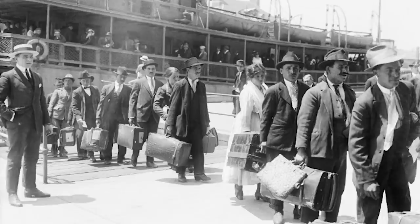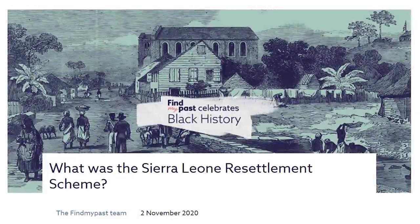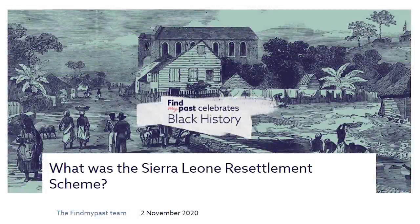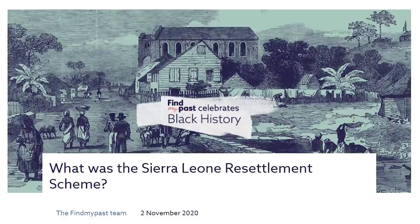Destinations have likewise not been random. Rather, particular destination points have tended to be linked to particular points of origin. Immigrants from particular towns in Lebanon often settled in clusters together in particular towns in Colombia. Among Lebanese immigrants to the West African nations of Sierra Leone and the Ivory Coast, there was likewise a concentration of people from particular locations in Lebanon, in particular parts of the new countries where they settled.